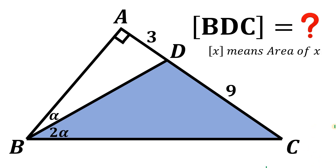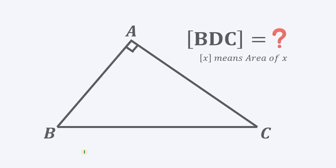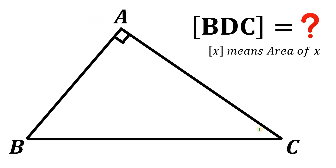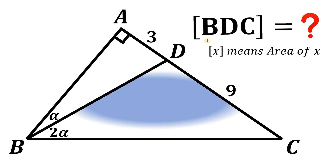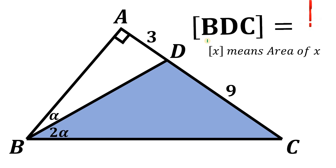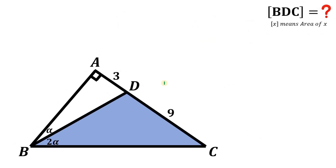Today we will answer a geometry challenge. Given this right triangle BAC, let's draw a segment BD such that segment AD is 3 units and segment DC is 9 units. It is also given that this angle is alpha and this angle right over here is 2 alpha. The question is to find the area of triangle BDC. Pause this video right now and see if you can answer this question, because I will show you the solution in three, two, one.